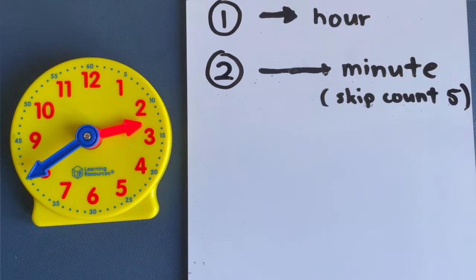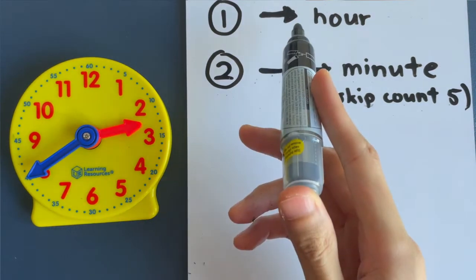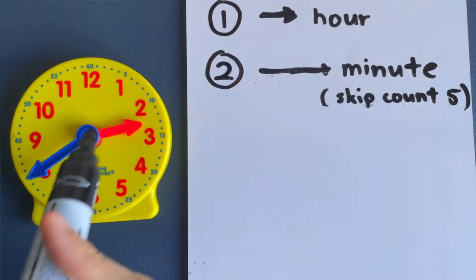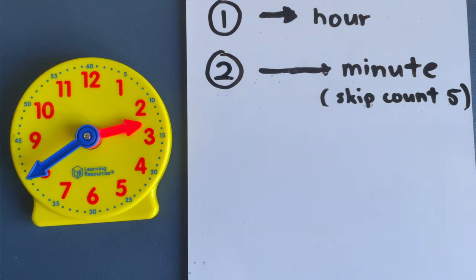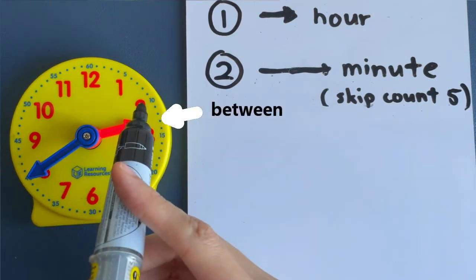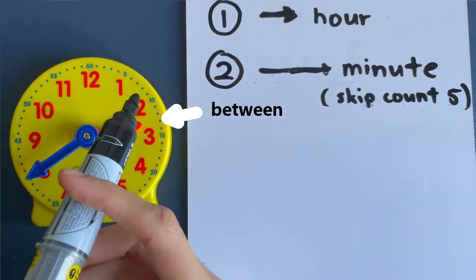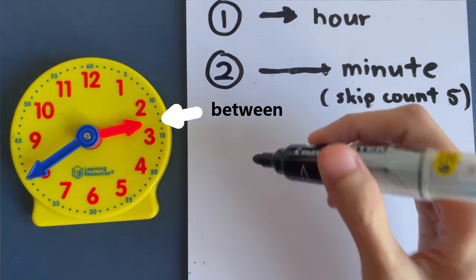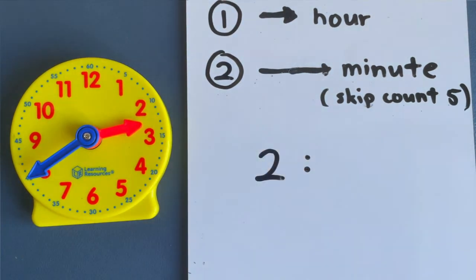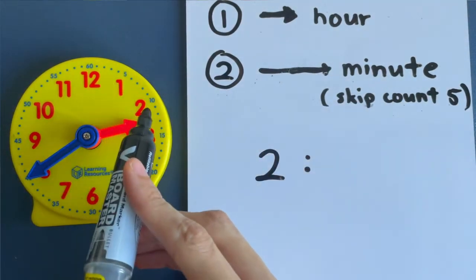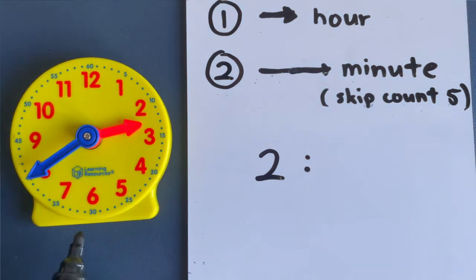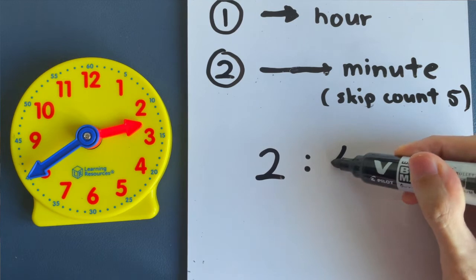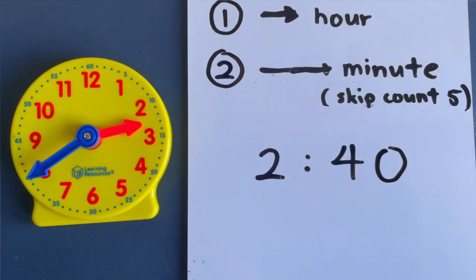Final example — what is the time? Follow the steps. Where is the hour hand? Is it pointing at 2? No. Is it pointing at 3? No — it is in between 2 and 3. When the hour hand is in between 2 and 3, the time is 2 o'clock. It's past 2 o'clock but not yet at 3 o'clock, so we write 2. Second step: look at the minute hand and skip count in fives — 5, 10, 15, 20, 25, 30, 35, 40 — stop. Write down 40. The time is 2:40.